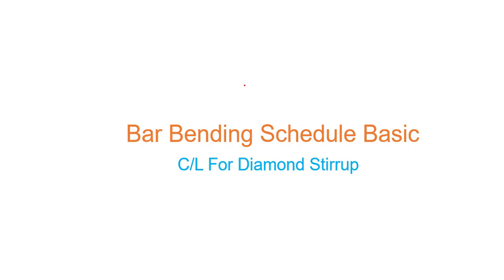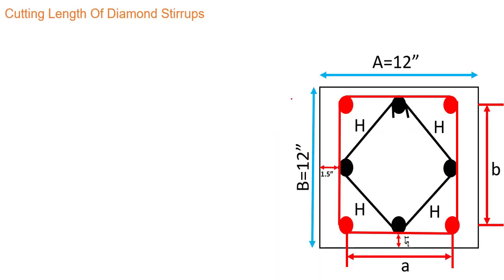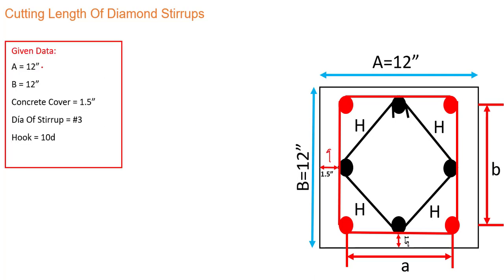Hello, in this tutorial we are going to find out the cut length of a diamond stirrup in a pair system. This is basically the cross section where our column cross section is 12 inch by 12 inch — it could be a column or beam as well. The concrete cover we are using here is 1.5 inch.